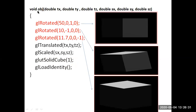Now let us understand how the OBJ function works step by step. When gl_rotate is called rotating 50 degrees along the Y axis, this is the resulting view. Next, performing rotation by 10 degrees along the negative X axis gives the negative X axis rotation. Then gl_rotate rotates 11.7 degrees along the negative Z axis, completing the rotation of the cube.